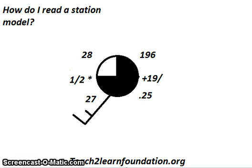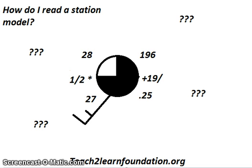Hello, I'm Tema from the Teach2Learn Foundation, and this is the Earth Science Review Series, Station Model Edition. So what is a station model? What do all these symbols mean? A station model is basically a condensed little chart that shows all of the features of the weather patterns at the time in one convenient place, but in a shorthand notation.